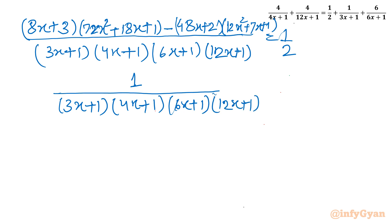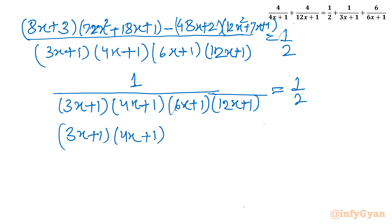Up to this point we used simplification. Now I will take the reciprocal. So I can write (3x+1)(4x+1)(6x+1)(12x+1) equals 2. Now this is a quartic equation we will solve easily.